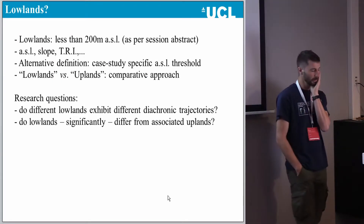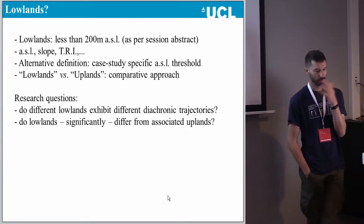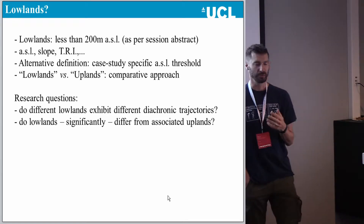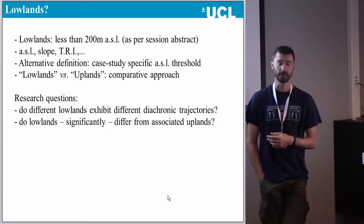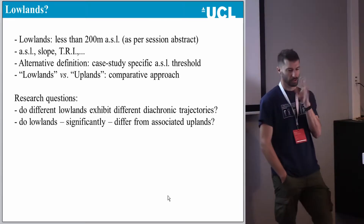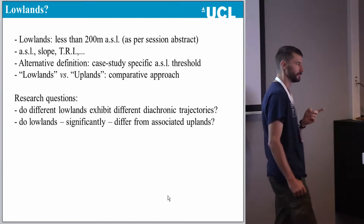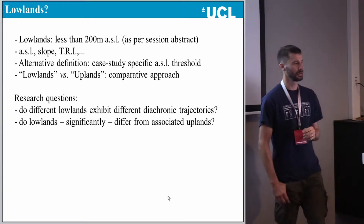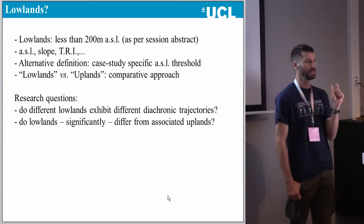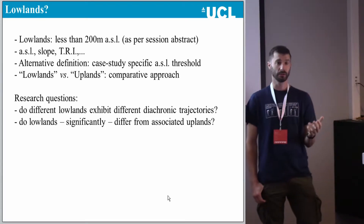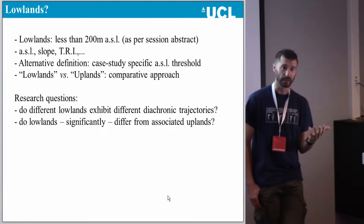In the session abstract, lowlands were defined as below 200 meters elevation. But when we define lowland, elevation is just one element — we can also look at slope, terrain ruggedness index, and so on. I'm going to keep it to a simple elevation aspect, but rather than a fixed value of 200 meters, I'll take a series of case studies across Europe and show that the value cannot be fixed — it has to change according to the nature of each landscape.